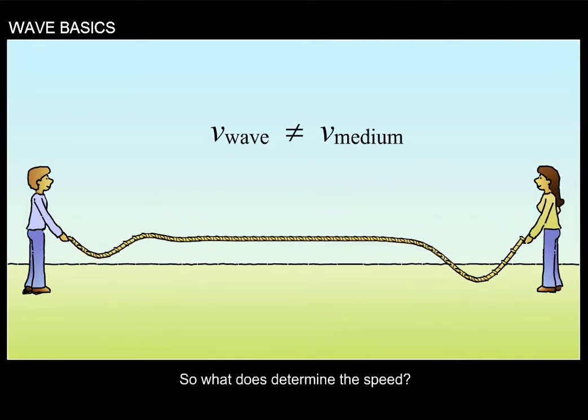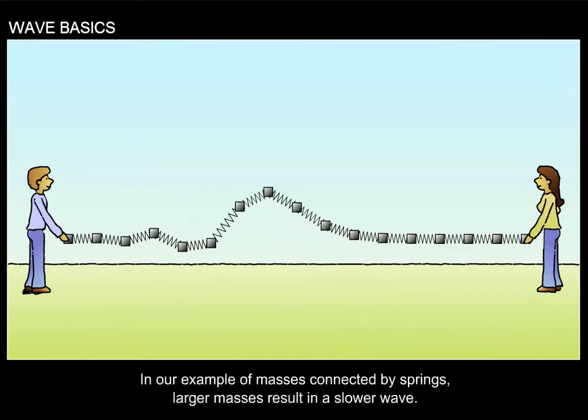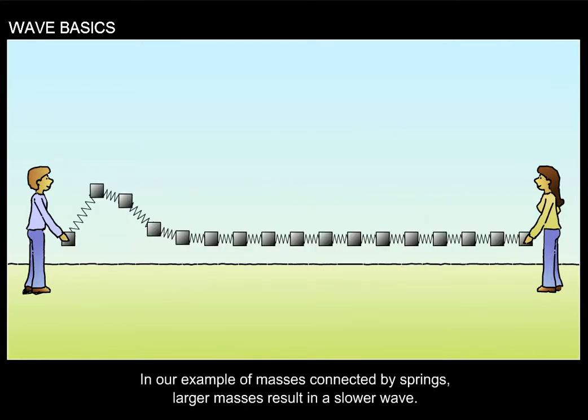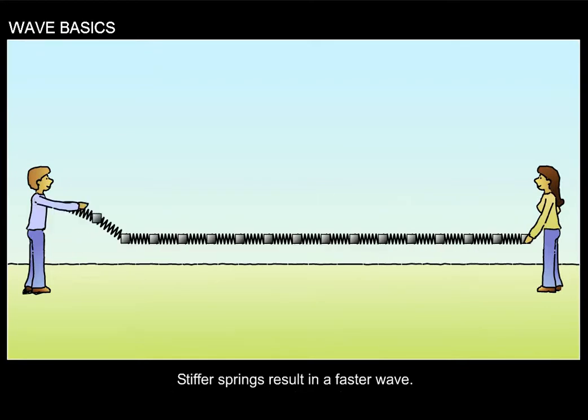So, what does determine the speed? In our example of masses connected by springs, larger masses result in a slower wave. Stiffer springs result in a faster wave.